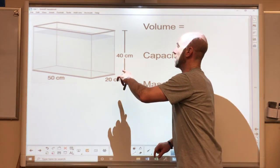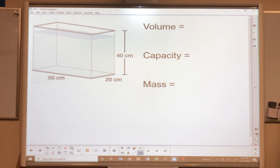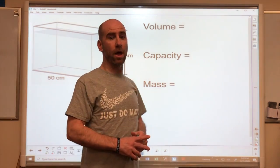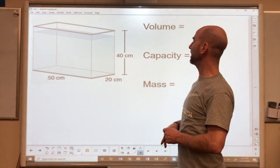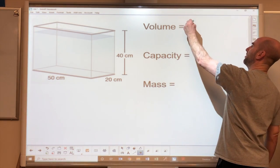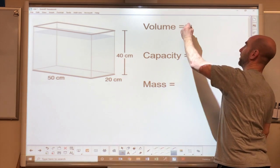So length times width times height. Okay, so length times width times height gives us a volume of 40,000 cubic centimeters.